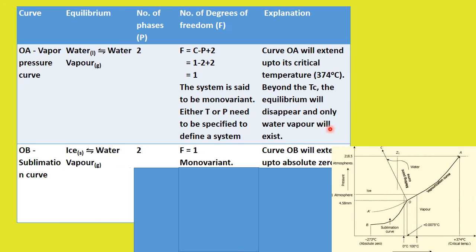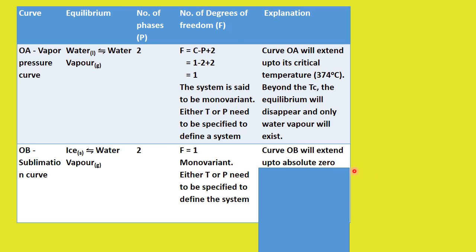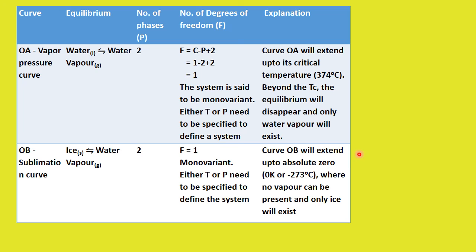Curve OB is called the sublimation curve. Here we have ice and water vapor in equilibrium, which occurs only at very low pressure. We have 2 phases and F = 1. The system is monovariant, and curve OB extends up to absolute zero — minus 273 degrees Celsius — where no vapor can be present and only ice exists.